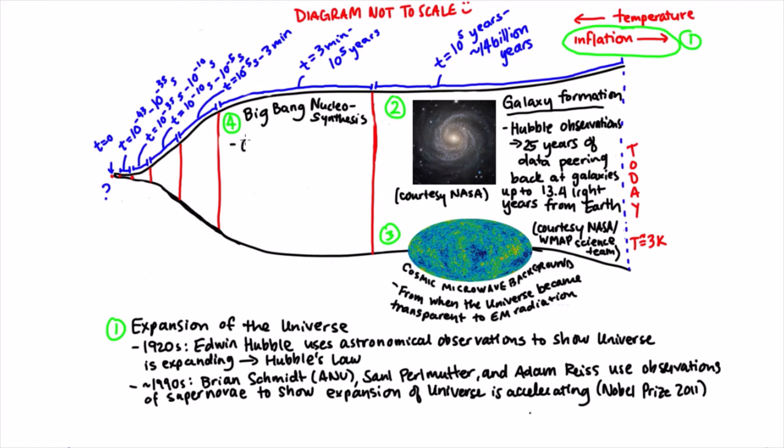By measuring the abundances of these elements in the universe, we've been able to confirm that our theory of Big Bang nucleosynthesis is largely consistent with observation. Basically, the abundances that we observe and the abundances we predict with Big Bang nucleosynthesis theory match up pretty well.